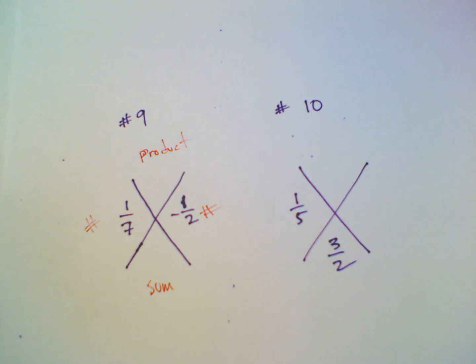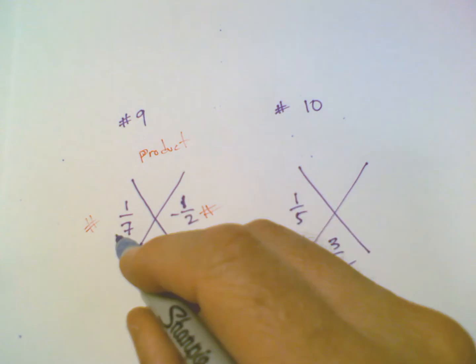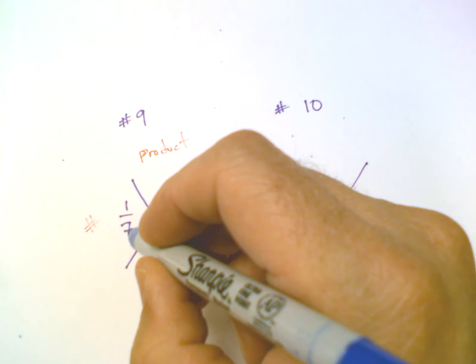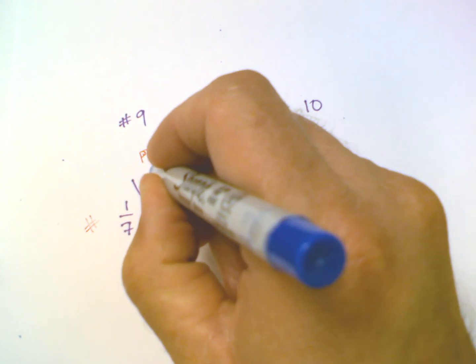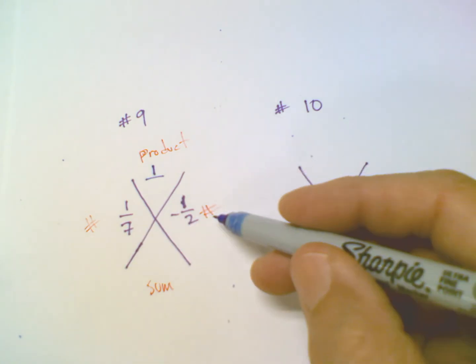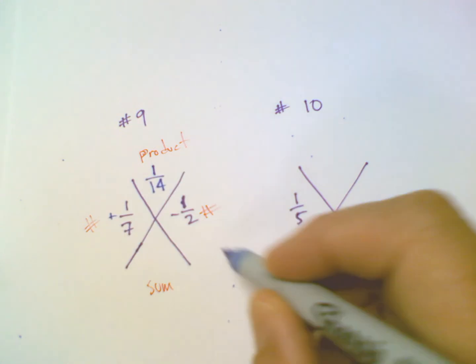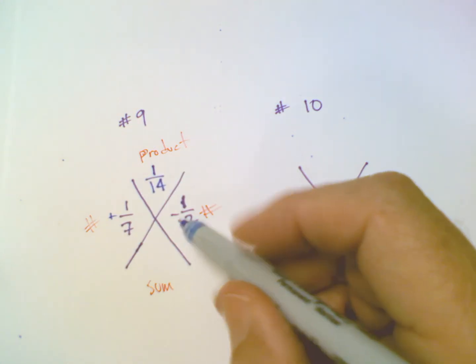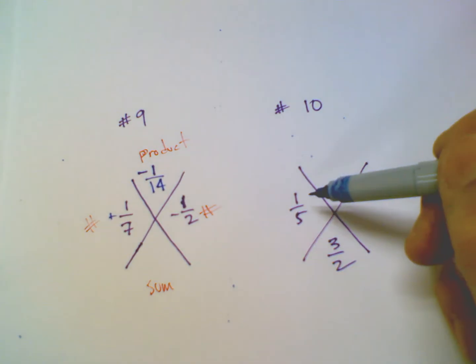So if we look at these two fractions, let's start with number 9. First of all, product, multiplying fractions, you multiply fractions straight across. So 1/7 times 1/2. Well, 1 times 1 is 1 on top, and then 7 times 2 gives you 14. And then we've got a positive number times a negative number, which makes it a negative product. So the top is negative 1/14.